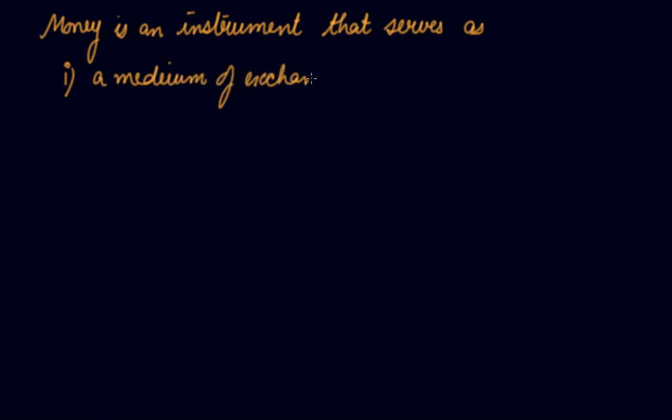Again, you can write the other definition of money as well, which is: money is an instrument that serves as, number one, a medium of exchange. Number two, a measure of value. It's a medium of exchange. You can exchange money for any good you want. You need to satisfy your wants. Measure of value: the money has some value. 5 rupees, 10 rupees, 100, 500. Even what you will buy in the market also has the value. So money created a measure of value.